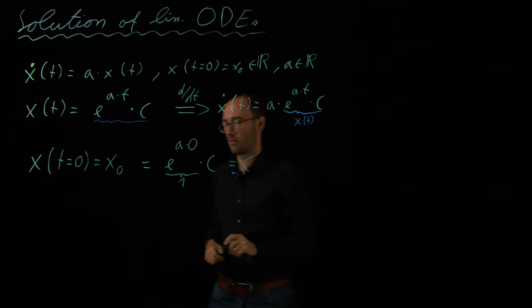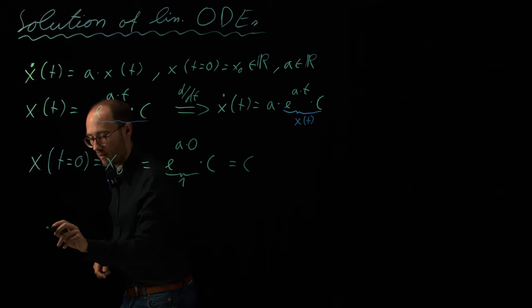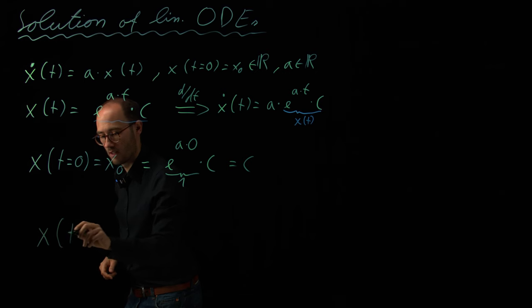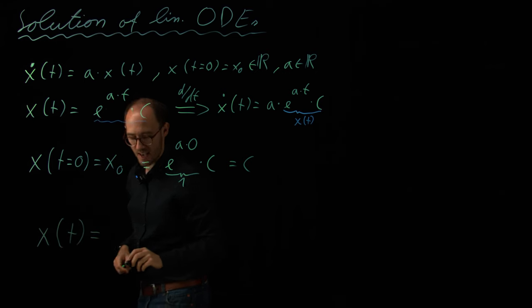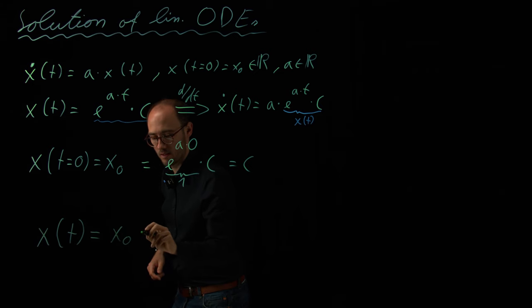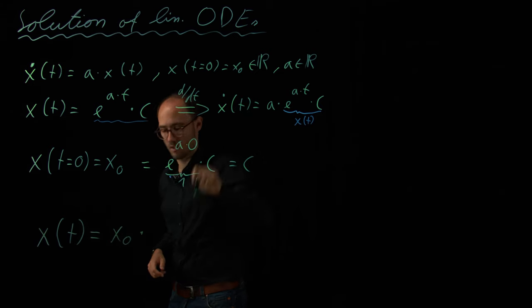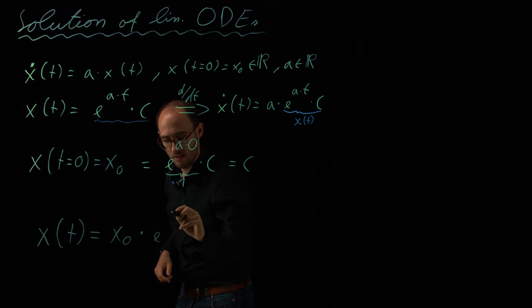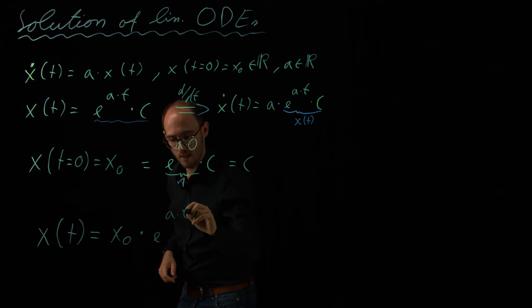And therefore, we can combine everything together and find out that our solution of our linear scalar ODE is x of t is identical to x zero, so our starting condition, our starting state, times e to the power of A t.